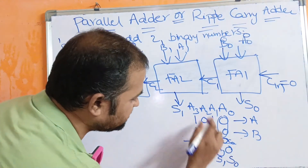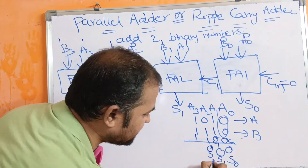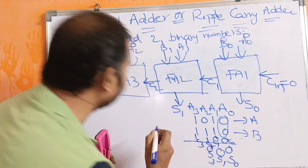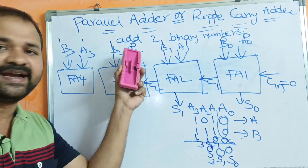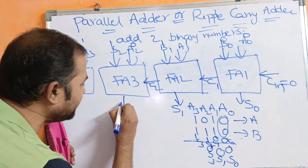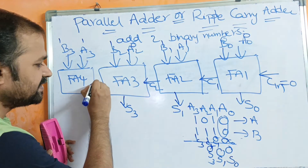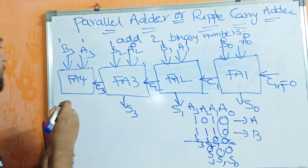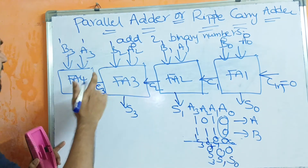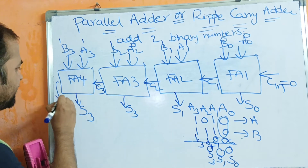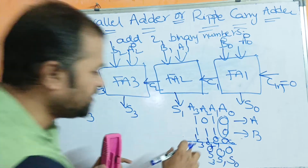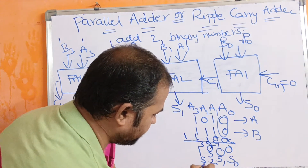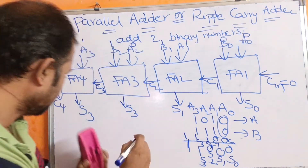Next, 1 plus 1 plus 0 gives sum 0 with carry 1. The third full adder performs addition on a2, b2, and c2, giving sum s2, and the output carry c3 is passed to the next full adder. The last full adder performs addition on a3, b3, and c3, giving sum s3 and carry c4. Since all three inputs are 1, the result is sum 1 and carry 1. So the final sum bits are s0, s1, s2, s3, and carry c4 equals 1.